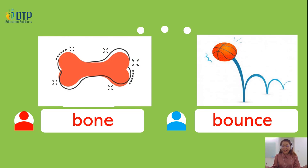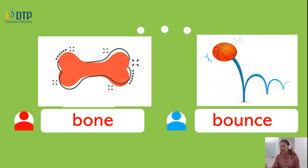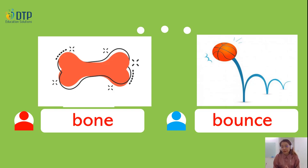Are they pronounced the same? No, they aren't. How do you pronounce the first word? It's 'bowl.' And the second word? It's 'bounce.' Do you remember the four words that you have just read with the OW sound?